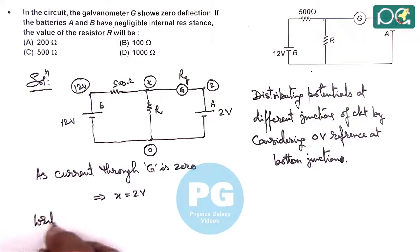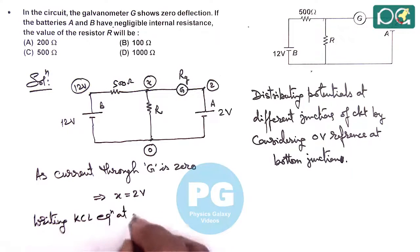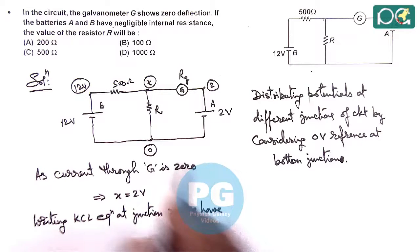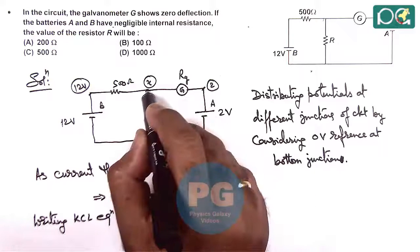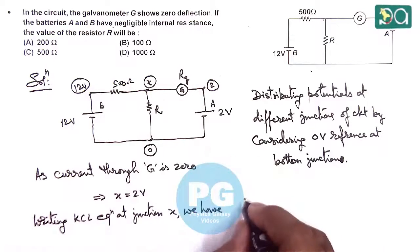Now, writing the KCL equation at junction X. For junction X, we can write that the sum of outgoing currents should be zero. So we can write: